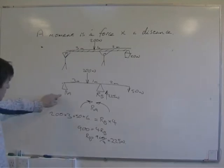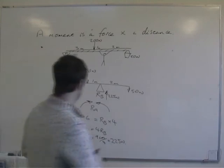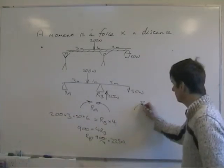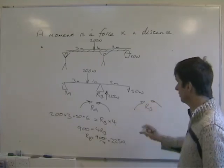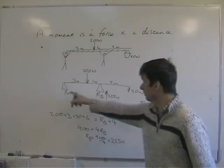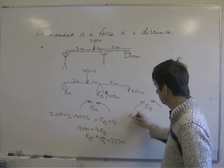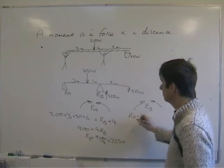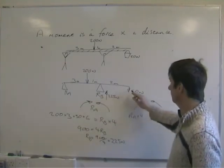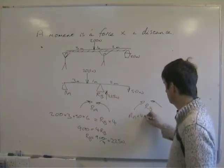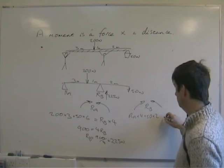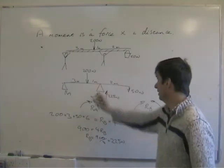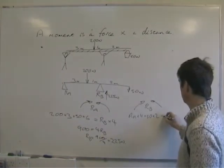To find RA, what we do is take moments about RB. So clockwise moments about RB equals anti-clockwise moments. So clockwise, you've got RA times 4, and 50 times 2, that's the moment of RB. Anti-clockwise, we have 200 times 1.